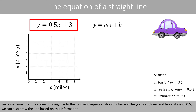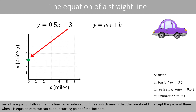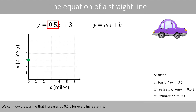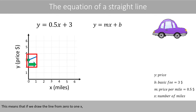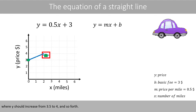Since we know that the corresponding line should intercept the Y axis at 3 when X is equal to 0, we can also draw the line based on this information. Since the equation tells us that the line has an intercept of 3, we can put our starting point of the line here. We can now draw a line that increases by 0.5Y for every increase in X. Starting from this point, if we draw the line from 0 to 1X, Y should increase from 3 to 3.5, then from 1X to 2X, Y should increase from 3.5 to 4, and so forth.